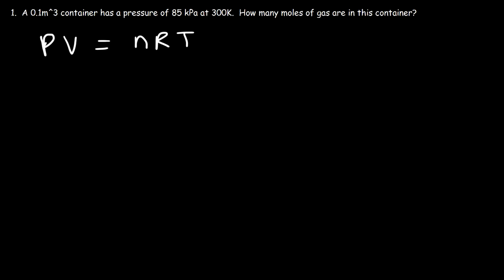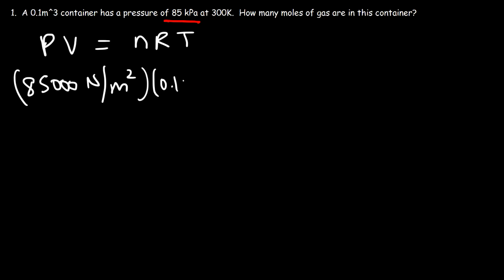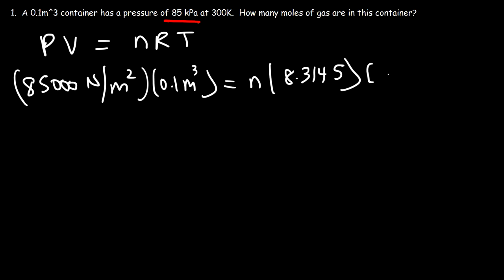Let's plug the data into the equation. The pressure is 85 kilopascals. Since 1 kilopascal is 1,000 pascals, the pressure is 85,000 pascals. The volume is 0.1 cubic meters. R is 8.3145, and the temperature is 300 Kelvin.